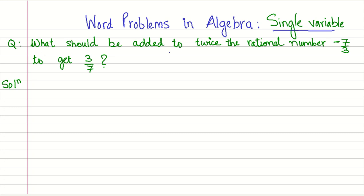Now let us look at the problem. What should be added to twice the rational number minus 7 by 3 to get 3 by 7? Now if you look at it, this problem involves rational numbers.